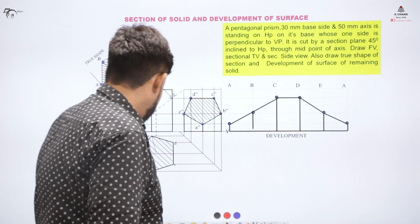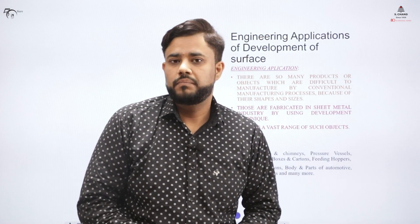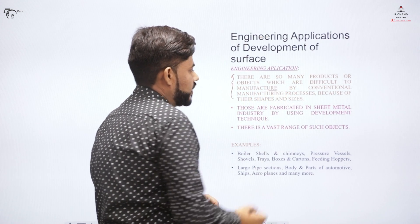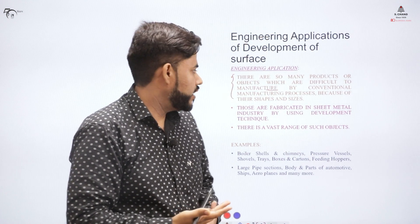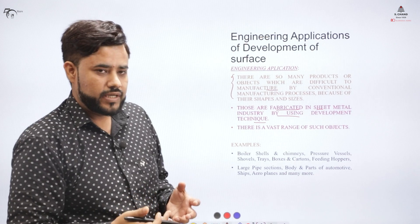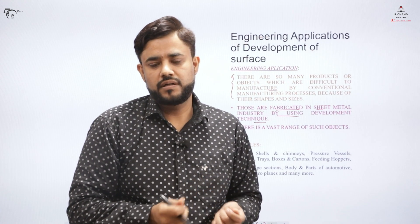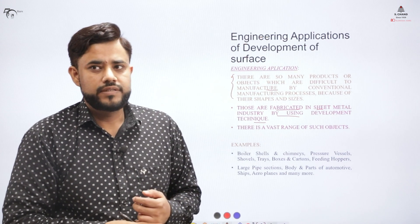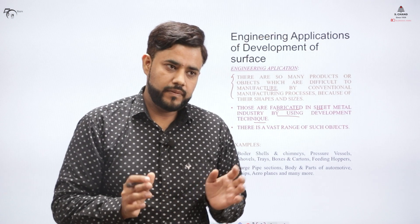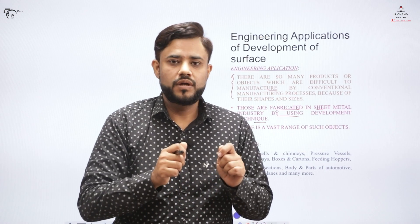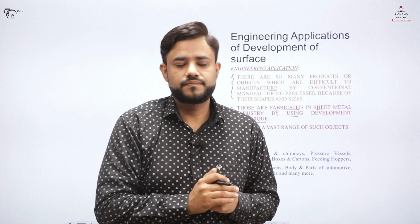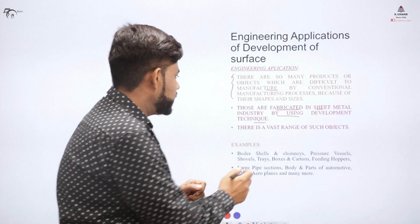You might be wondering about the engineering applications of development of solids. Objects that are difficult to manufacture by conventional processes due to their complex true shapes and sizes are generally fabricated in the sheet metal industry using the development technique. For example, before fitting sheet metal onto a structure like an almirah, you purchase the necessary length — which is the development of the surface — and then join the sheet to the object.